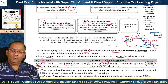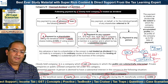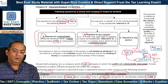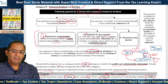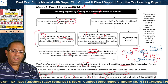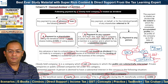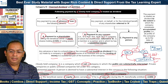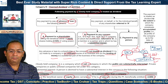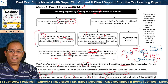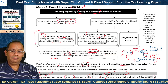In both cases (a) and (b), there is an exception: even if the case is covered, it is still not treated as deemed dividend if the payment is made by the company in the ordinary course of its business and the lending of money is a substantial part of the business of the company. So if the closely held company is a money-lending company, the grant of loan or advance will not be treated as deemed dividend.